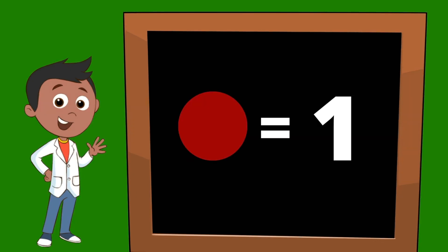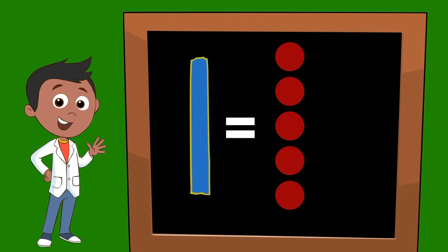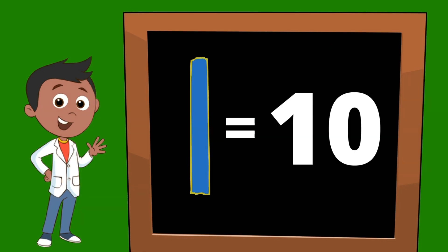If each dot is one, let's count how many dots are equal to one ten stick. One, two, three, four, five, six, seven, eight, nine, ten. Ten red dots are equal to one ten stick.